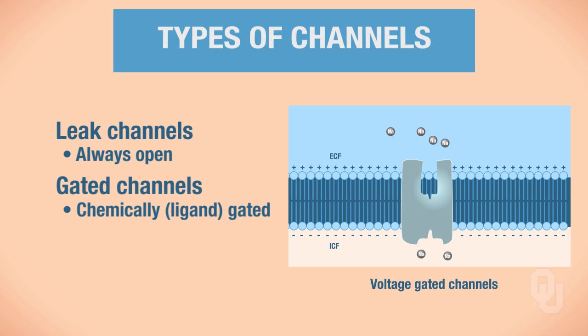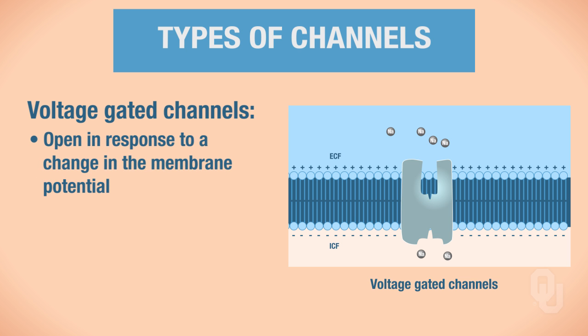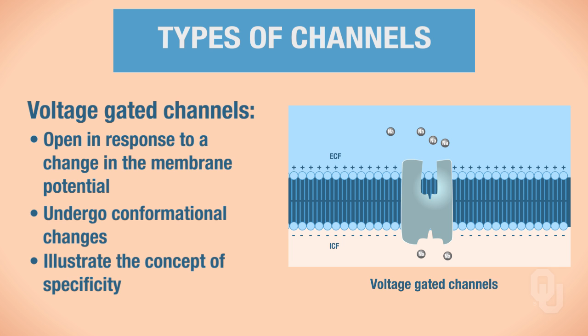After we discuss voltage-gated channels, you should compare and contrast what you learned about chemically-gated or ligand-gated channels to what you're going to learn about voltage-gated channels. The figure on the right illustrates voltage-gated channels. These voltage-gated channels are going to open in response to a change in the membrane potential. Voltage-gated channels do undergo conformational changes and illustrate the concept of specificity.